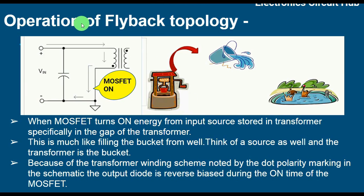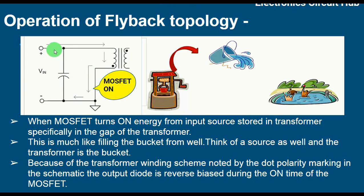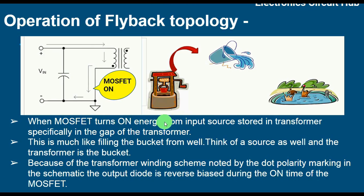Now let us understand the operation of flyback topology. On the primary side we have the input voltage, transformer primary winding, and the switch. When the MOSFET is on, current is flowing through the primary winding of the transformer. When the MOSFET turns on, energy from the input source is stored in the transformer, specifically in the gap of the transformer. This is much like filling a bucket from a well — think of the source as the well and the transformer as the bucket.